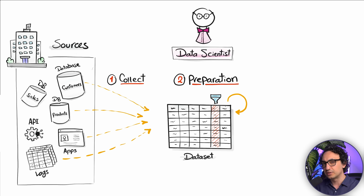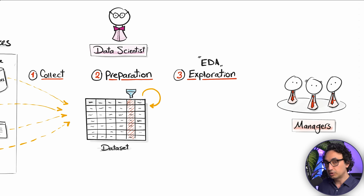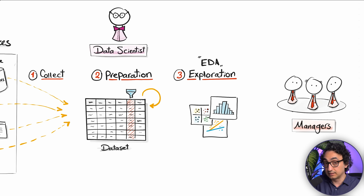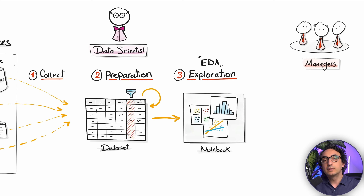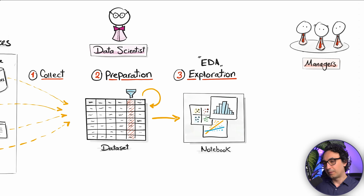Now we have a clean, structured dataset ready for the next steps. Before touching machine learning, we have to do something very important: exploratory data analysis (EDA). We open our notebooks and start asking questions — how is the data distributed, how can we cluster customers, are there outliers, what are the relationships between different measures? We explore and understand the content of the data.